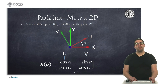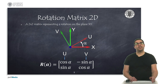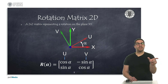A positive rotation implies a counterclockwise turn. If you look at the expression of the rotation matrix in two dimensions, the first column corresponds to the coordinates of the u vector, and the second column corresponds to the coordinates of the v vector. The u and the v vectors are the original frame axes once rotated.